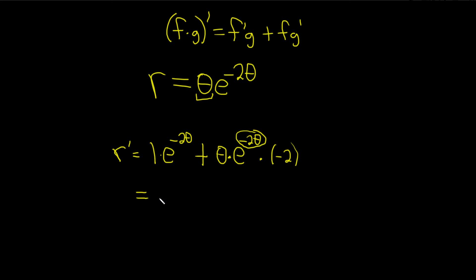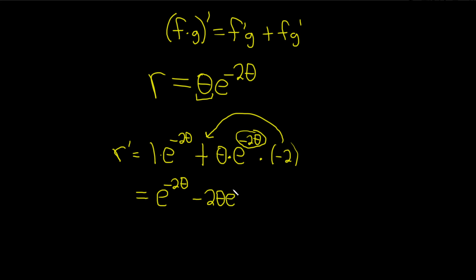This simplifies to e to the negative 2 theta. Let's put the negative 2 in the front: negative 2 theta e to the negative 2 theta. And that would be the final answer.